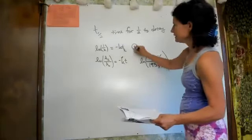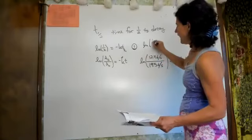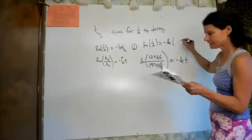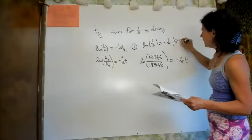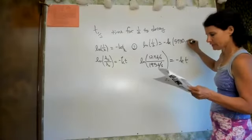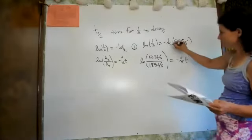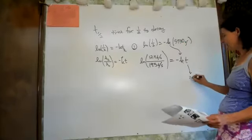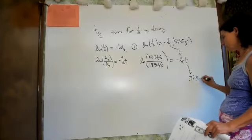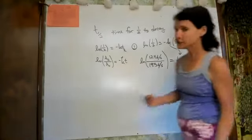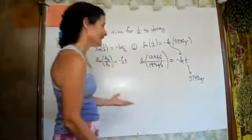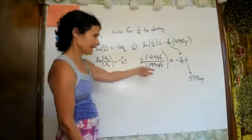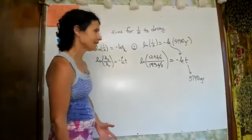Step one: plug in natural log of one-half equals negative K times 5730 years. Solve for K, plug that K in, then solve for time. The time comes out to about 3740 years. Does your answer make sense? Yes — it has not yet gone through a half-life, because at one half-life it would be around 9.75.